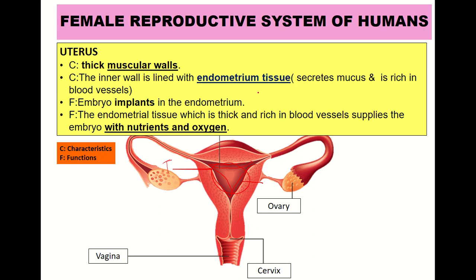The endometrium tissue secretes mucus and is rich in blood vessels. The function of the uterus is for implantation — that is, embedding of the embryo if pregnancy occurs. The next function is to supply the embryo with nutrients and oxygen, since the endometrium tissue is thick and rich in blood vessels.